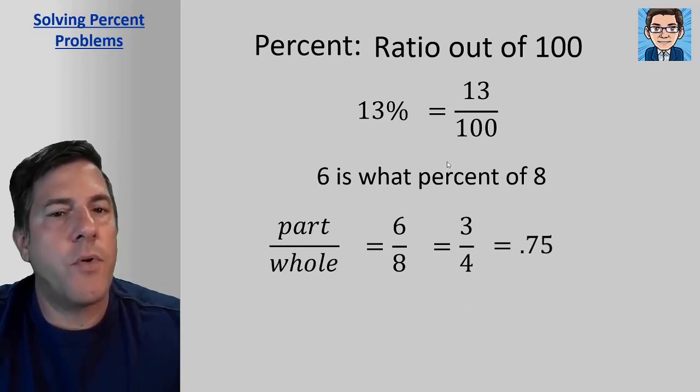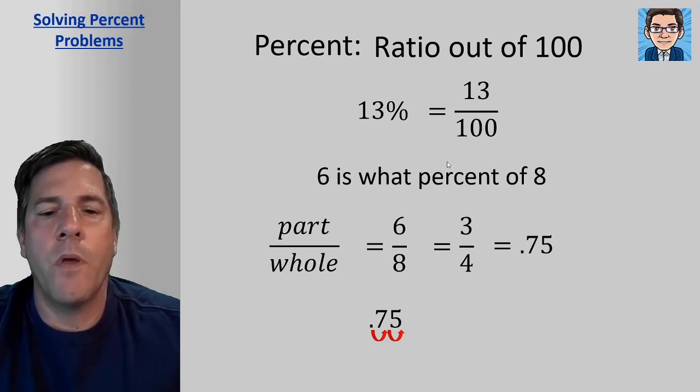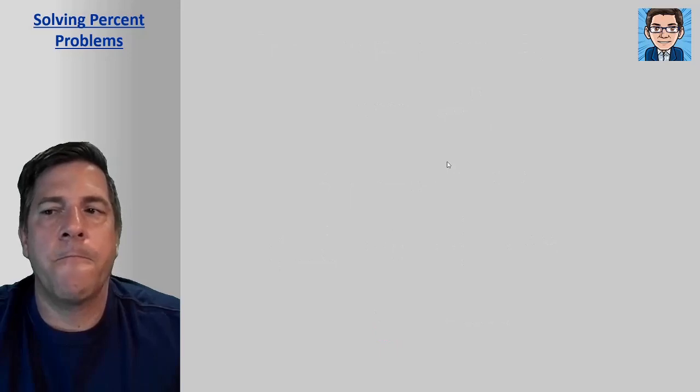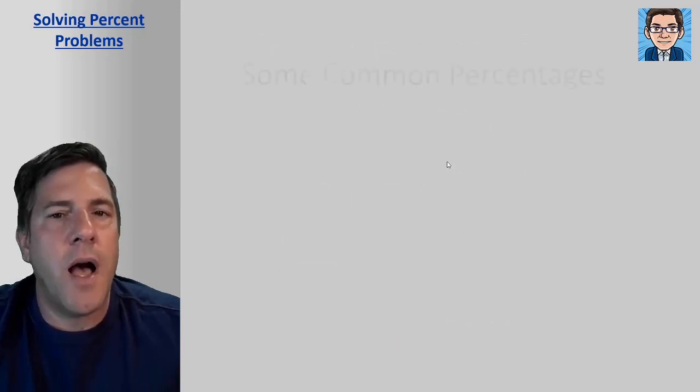So then as a percent, 0.75 as a percent, we've got to move the decimal point over two places to make it a percent. So 0.75 as a percent is going to be 75%.